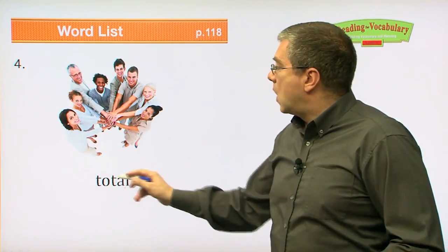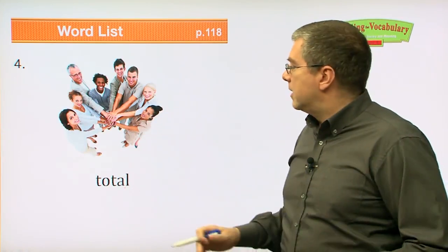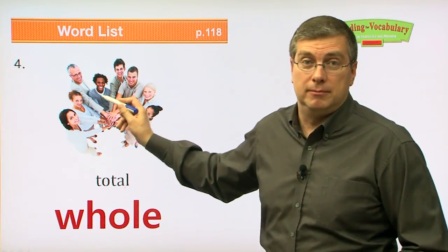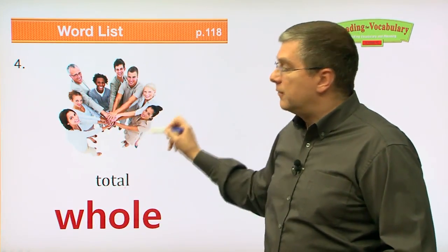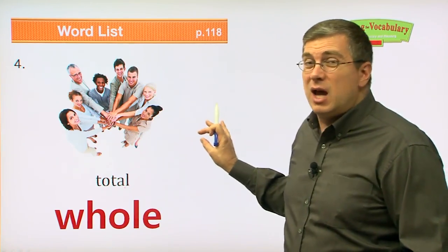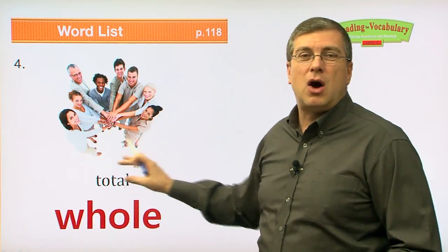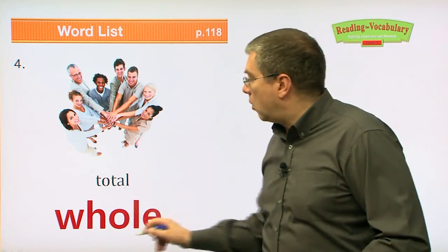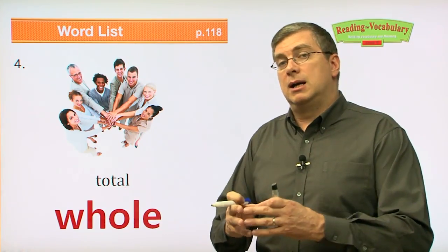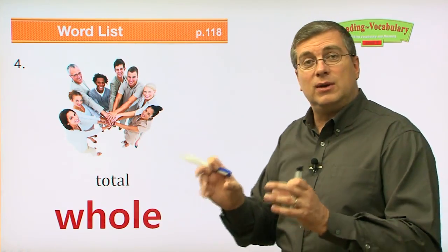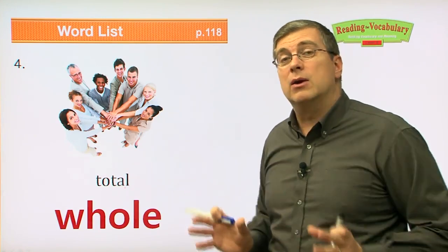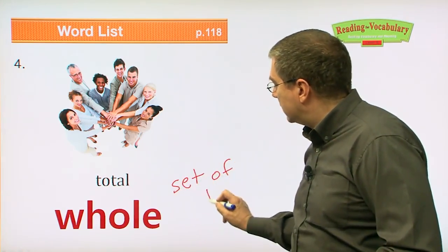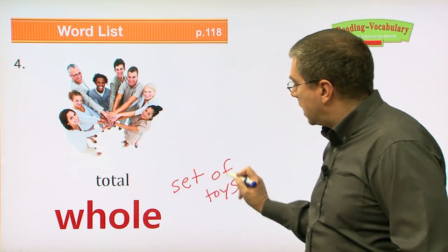Next one: total, whole. If everybody gets together, they are the total — they are the whole. Let's say these people are working together — they are a whole team, the total sum of the team. If one person is missing, they're not whole. It can also be a set of toys: if you have five different toys, they make the total set, they are the whole set. The whole set of toys, the whole set of food — they're all together.